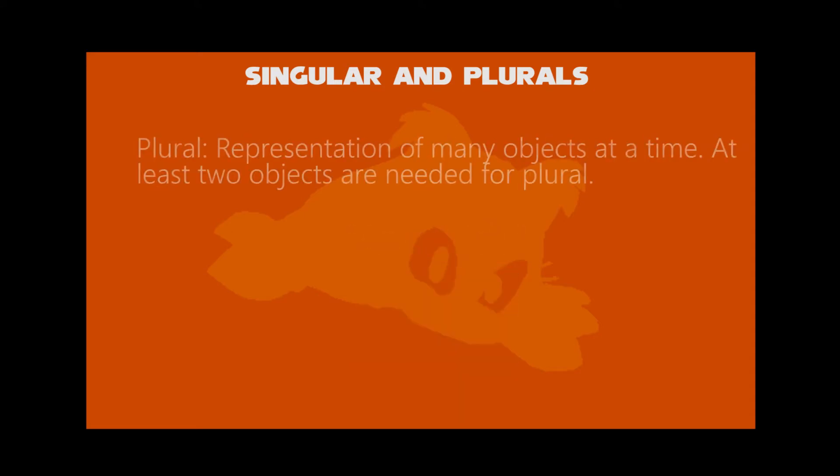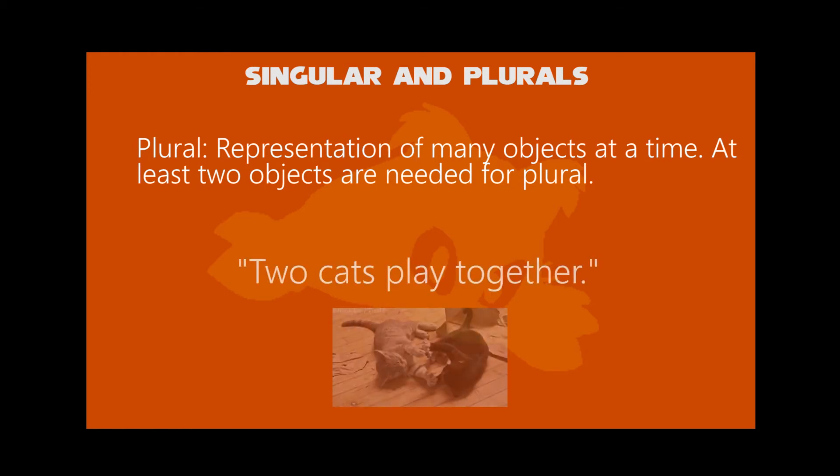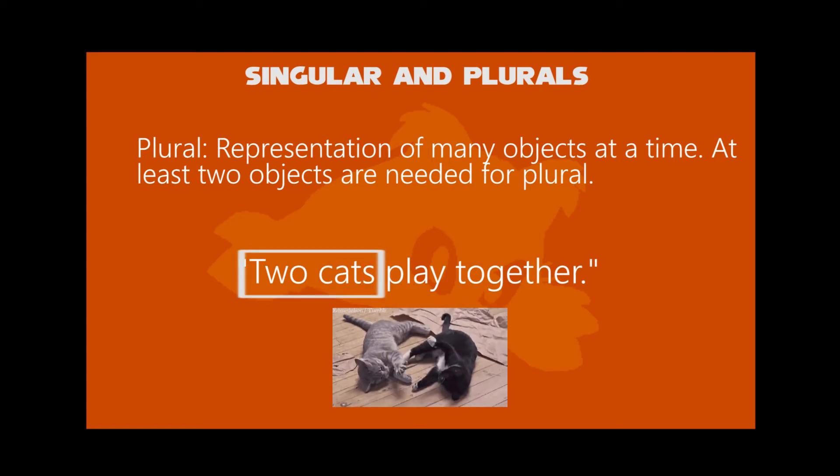On the other hand, plural can be represented as many objects. Minimum is at least two. For example, two cats play together. The s is added on plural, we can indicate two cats.